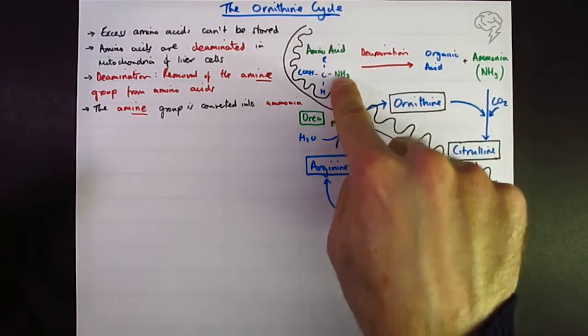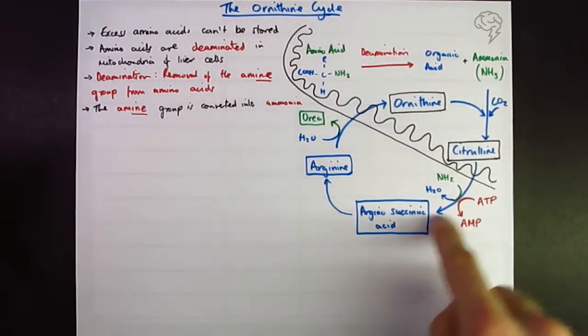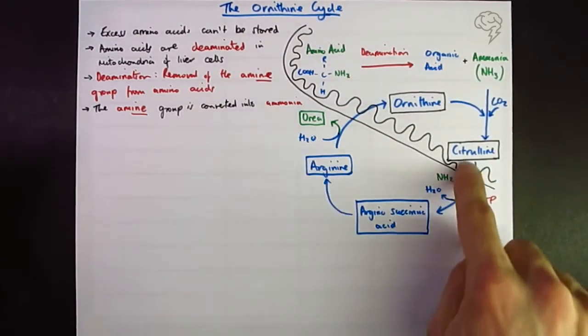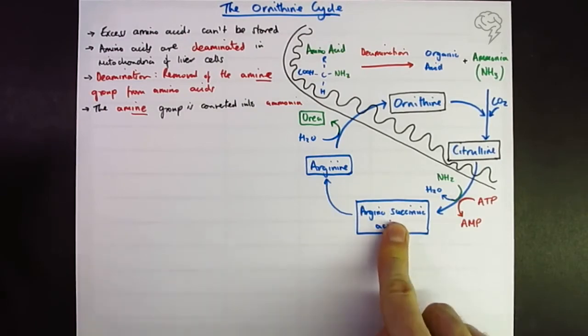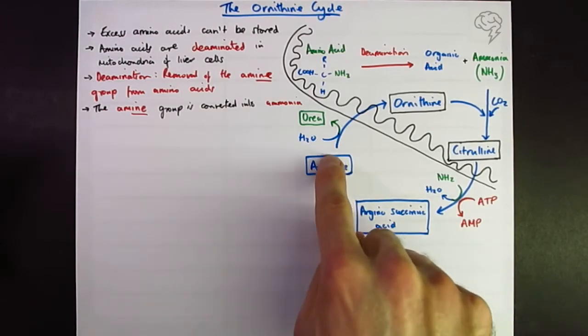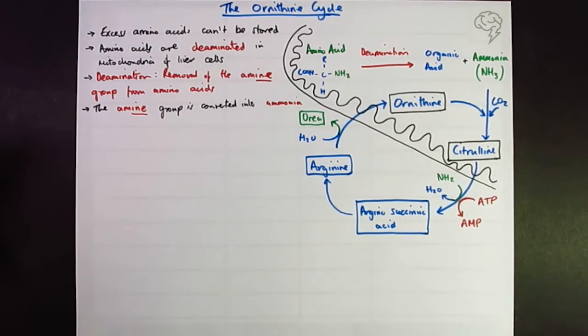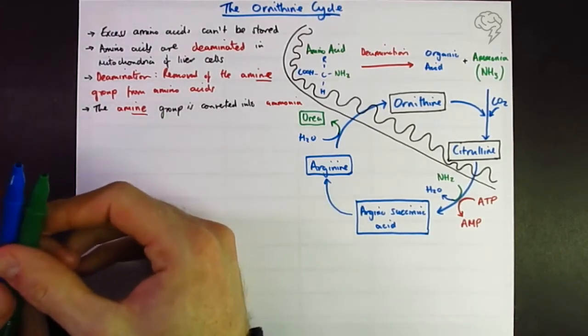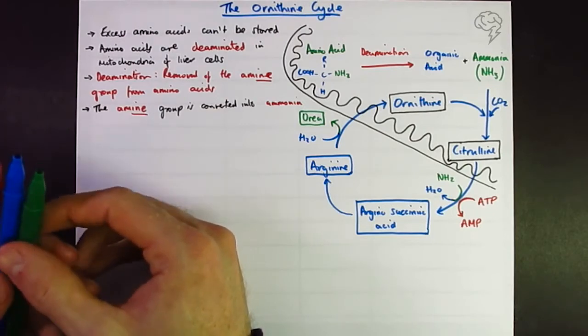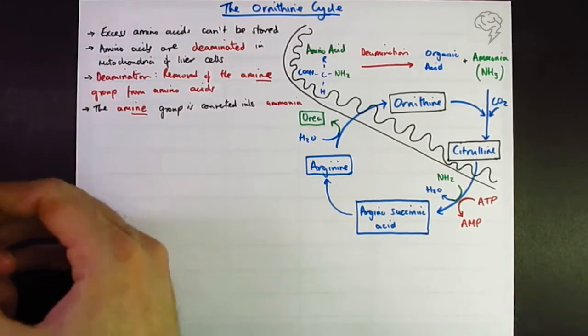So ornithine plus ammonia plus carbon dioxide to citrulline - quite important, happening inside the mitochondria. Deamination is removal of the amine group from the amino acid to form the ammonia in the first place. Then we go through other reactions. These are rarely asked about but you are supposed to know their names: arginosuccinic acid to arginine. Arginine then gets converted into urea and ornithine by adding water.